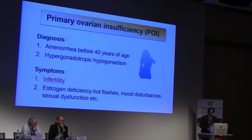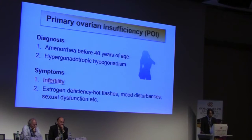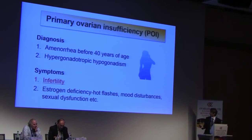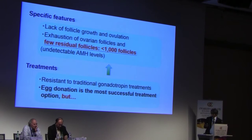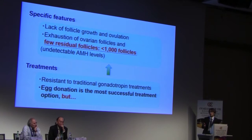POI, also called premature ovarian failure, is diagnosed by amenorrhea before 40 years of age with hypergonadotropic hypogonadism. Patients show infertility and symptoms caused by estrogen deficiency such as hot flushes, sleep disturbances, and sexual dysfunction. Specific features of POI include lack of follicle growth and ovulation, exhaustion of ovarian follicles, and fewer than 1,000 residual follicles. AMH levels are almost undetectable, and patients are really resistant to traditional gonadotropin treatments.